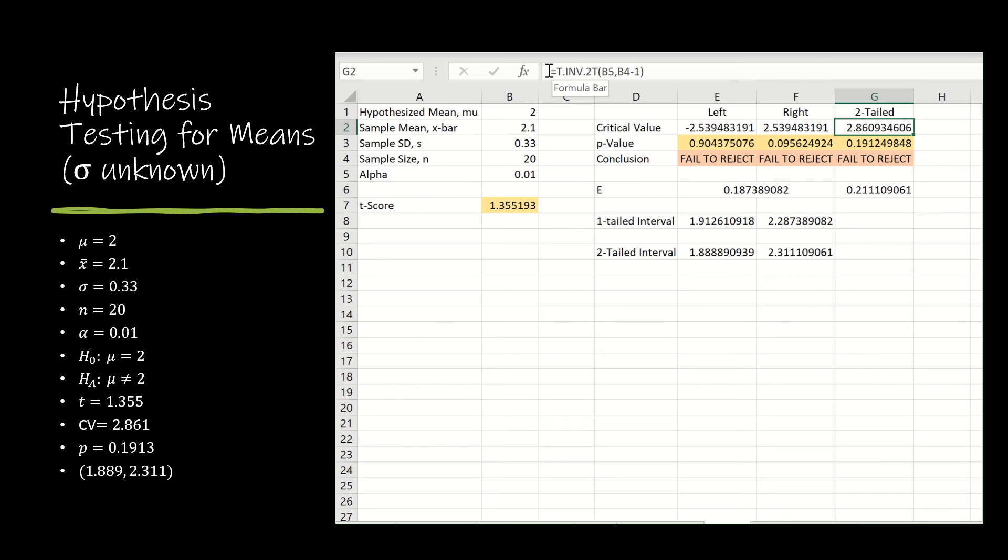And so all I have to do is T inverse two-tail and then alpha and then degrees of freedom, which is n minus 1.